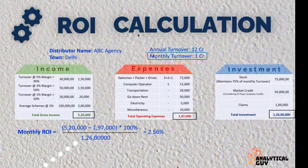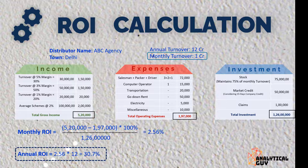Annual ROI is monthly ROI multiplied by 12, giving us 30.7%. This ROI for the distributor is really healthy. As already discussed, anything above 20% is considered healthy, so for this example the ROI is excellent.